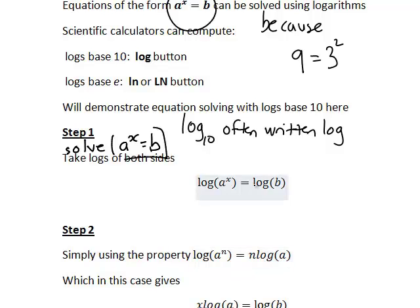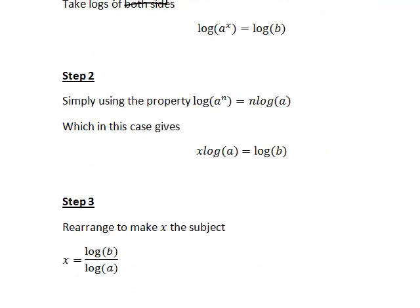So applying that to our previous step, that would become x log a is equal to log b. Since x is simply now multiplied by log a, to make x the subject we can divide both sides by log a, which gives us x equal to log b divided by log a.